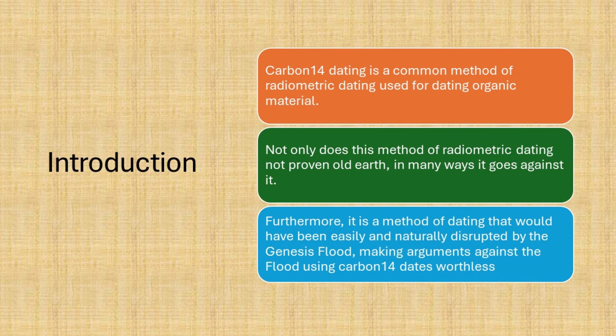Carbon-14 dating is a common method of radiometric dating used for dating organic material. Not only does this method of radiometric dating not prove an old Earth, in many ways it goes against it. Furthermore, it is a method of dating that would have been easily and naturally disrupted by the Genesis Flood, making arguments against the Flood using carbon-14 dating worthless.